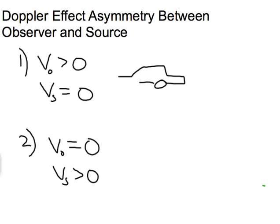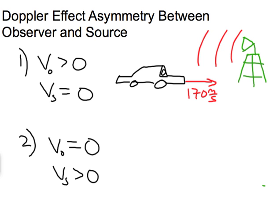So let's draw the situation here. Here's a car, here's the observer in the car, and he's moving at some speed. Let's give it a number, let's call it 170 meters per second. And he's moving towards the sound tower, so here's the speaker, and it's going to be emitting sound waves. That's situation one.